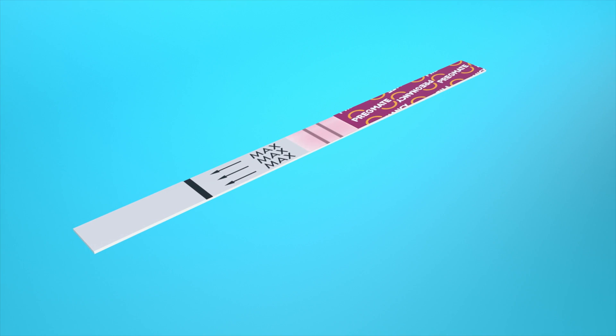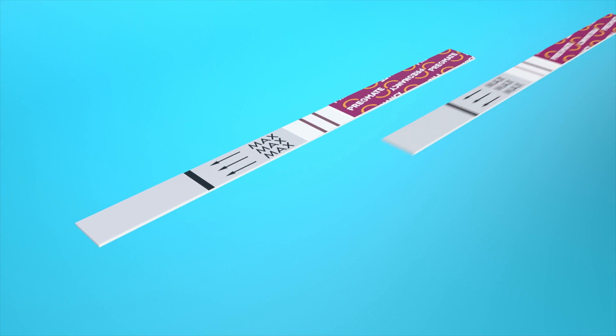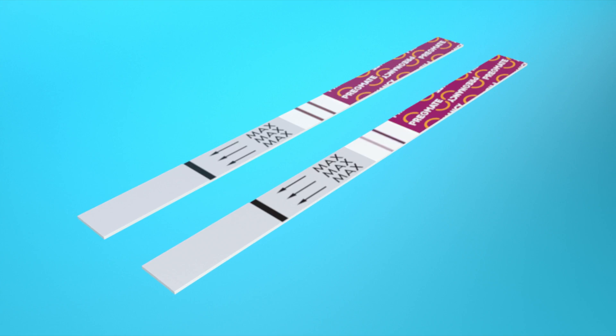If you get a positive result with just two lines, you are pregnant. This is true no matter how faint the test line is.